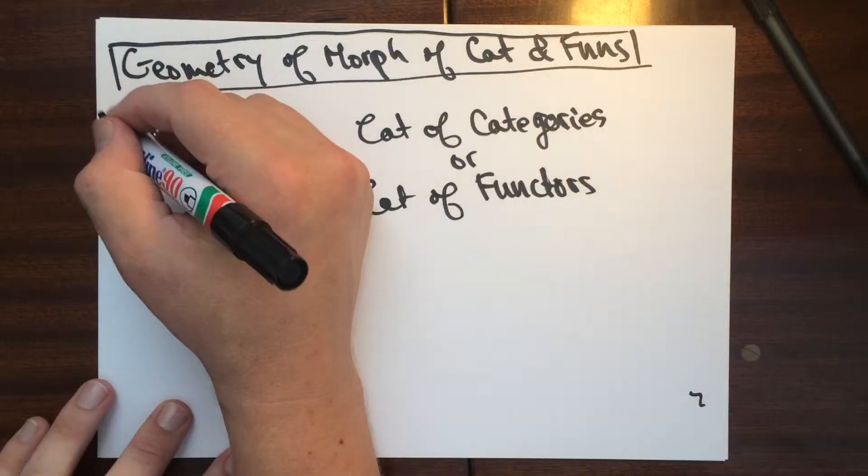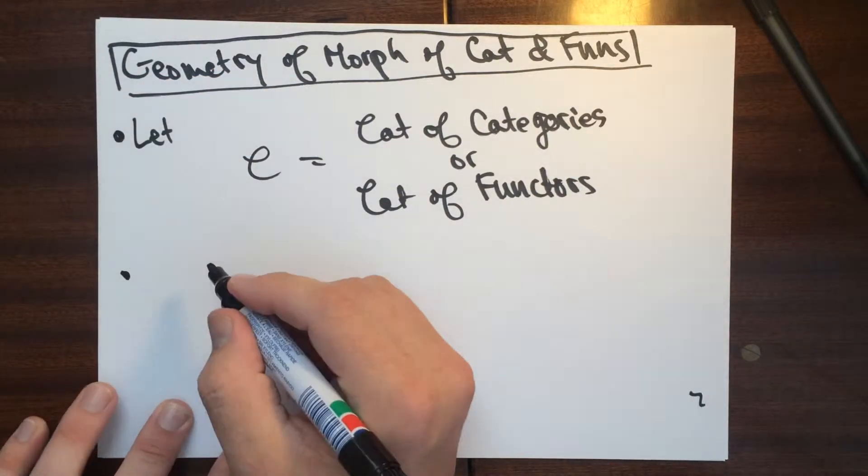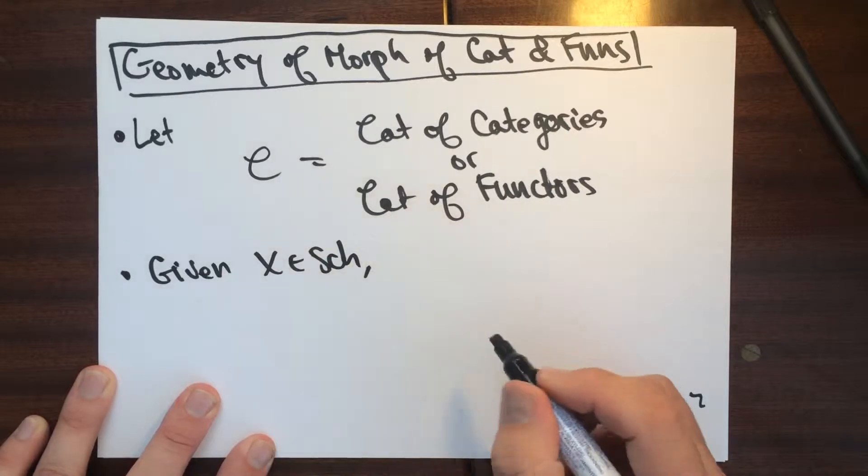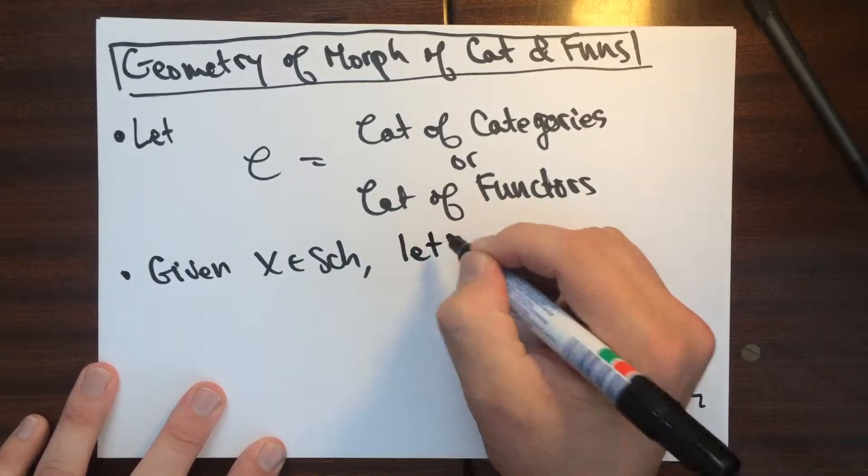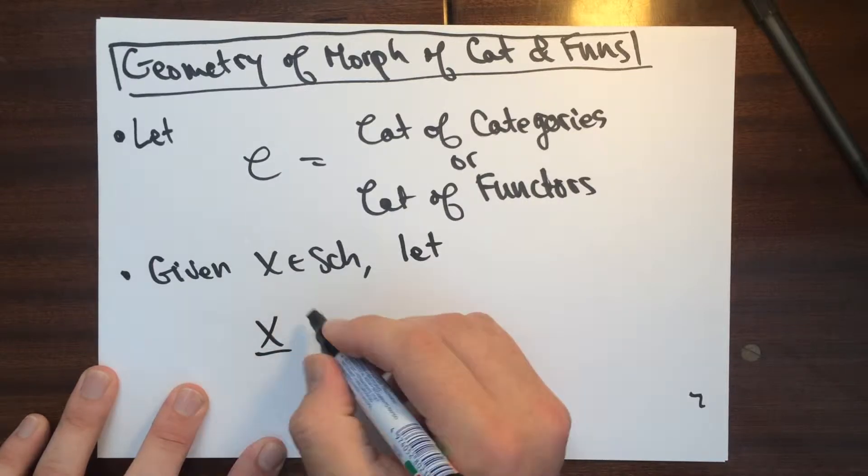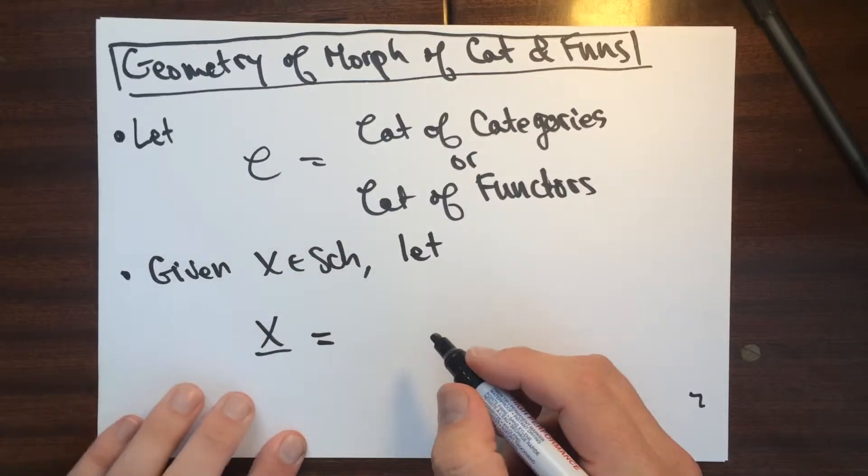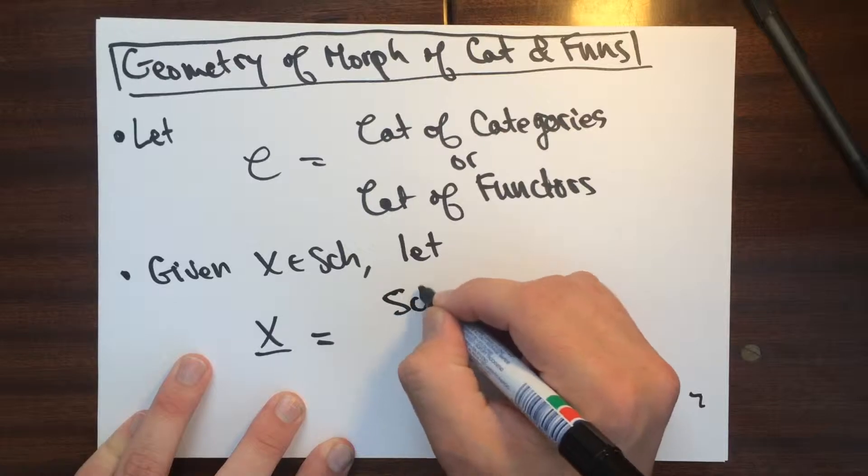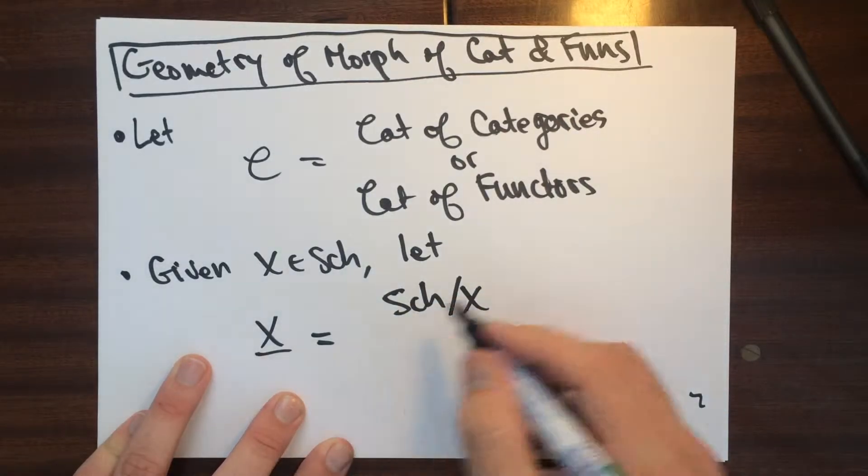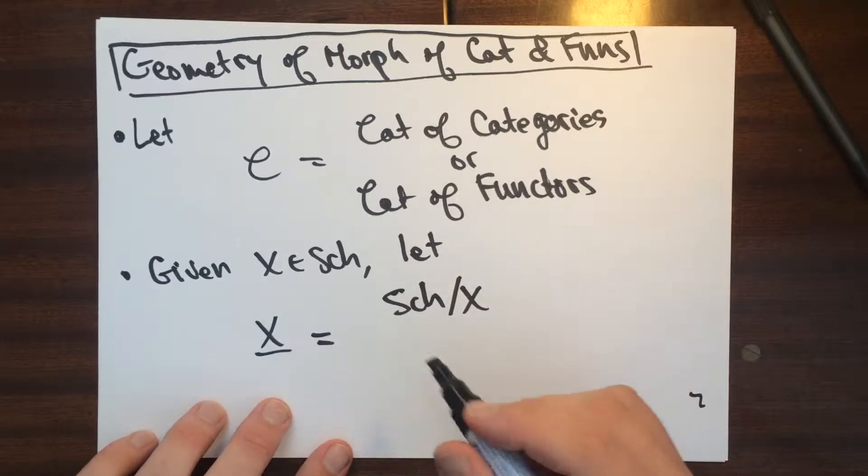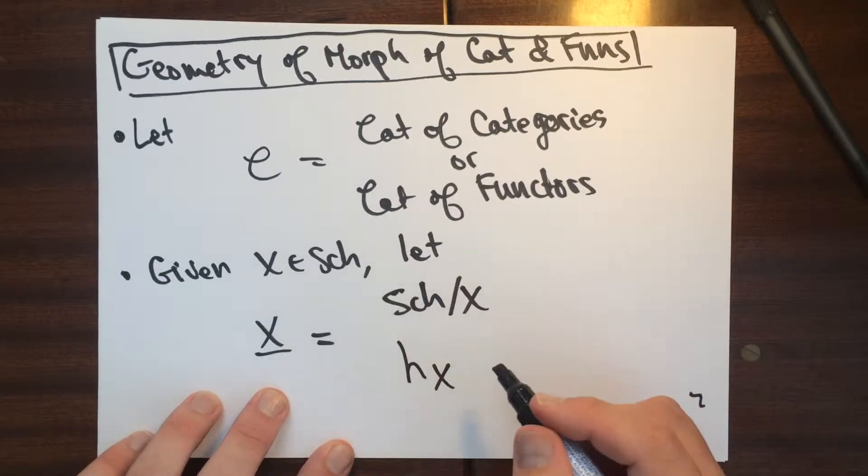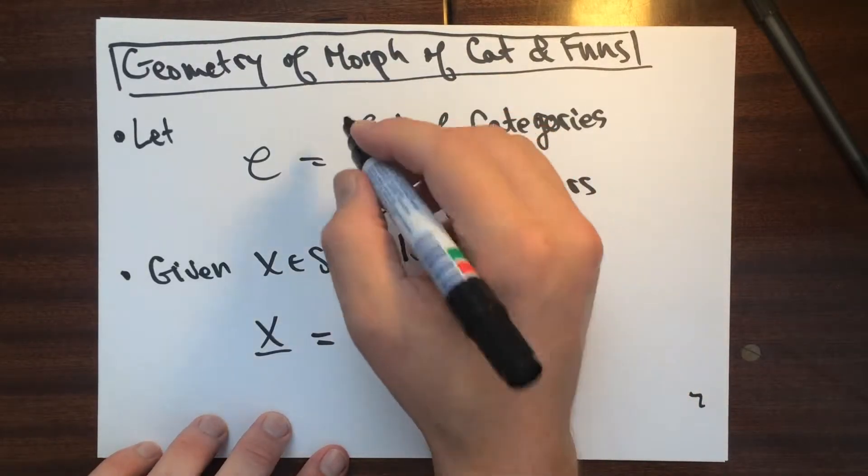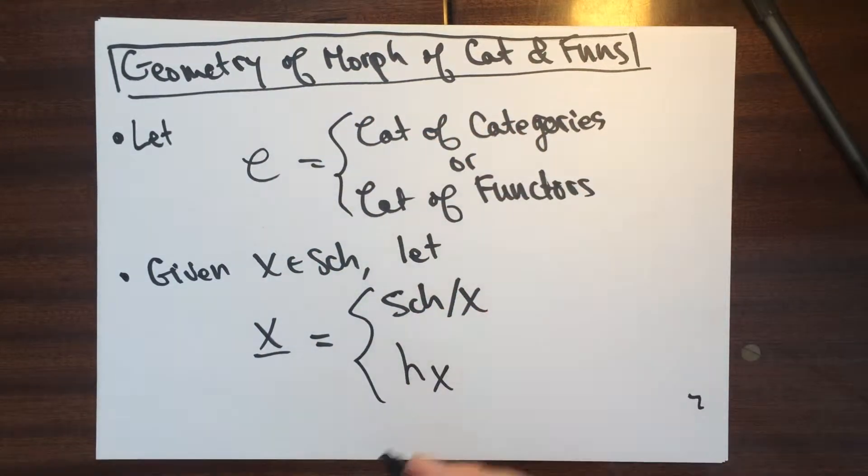And so this is one of the things that we wanted. Given a scheme, we're going to let X bar here be equal to either the scheme over X, so this is the associated scheme, or we're going to do H sub X, so this is the functor of points, depending on which case we're in here. So this is kind of the two things that we're going to do.